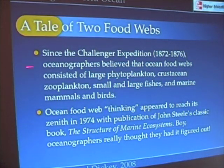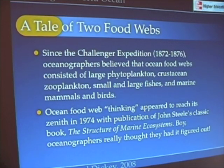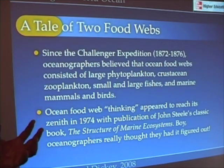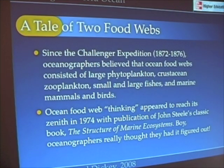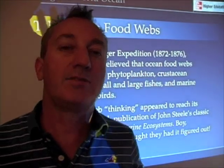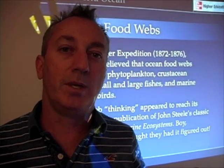Really since the Challenger expedition in the late 1800s, oceanographers believed that food webs consisted of phytoplankton, zooplankton, small fishes, marine mammals, and birds. This is what we call the classical food web.